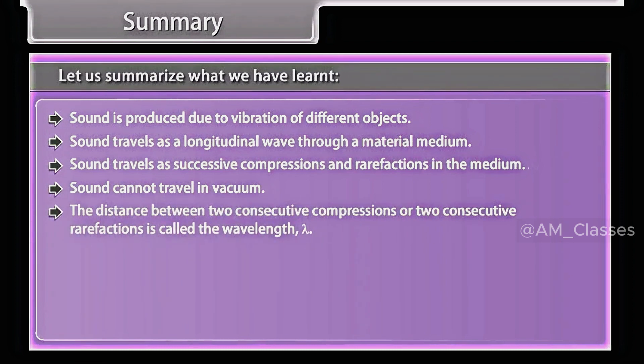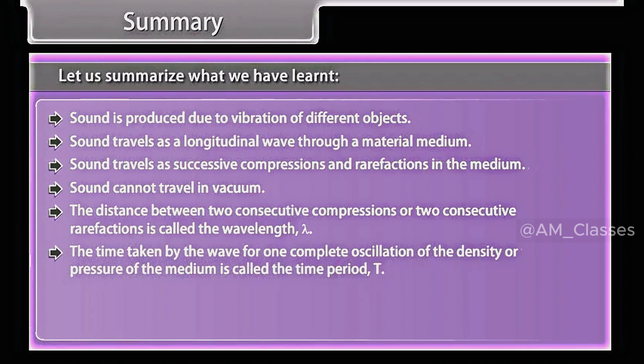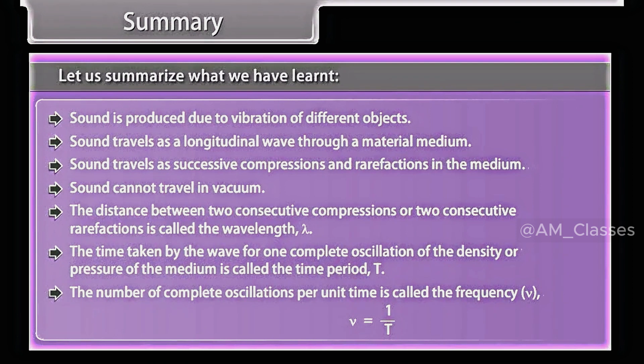The distance between two consecutive compressions or two consecutive rarefactions is called wavelength, lambda. The time taken by the wave for one complete oscillation of the density or pressure of the medium is called the time period, T. The number of complete oscillations per unit time is called the frequency, nu is equal to 1 upon T.